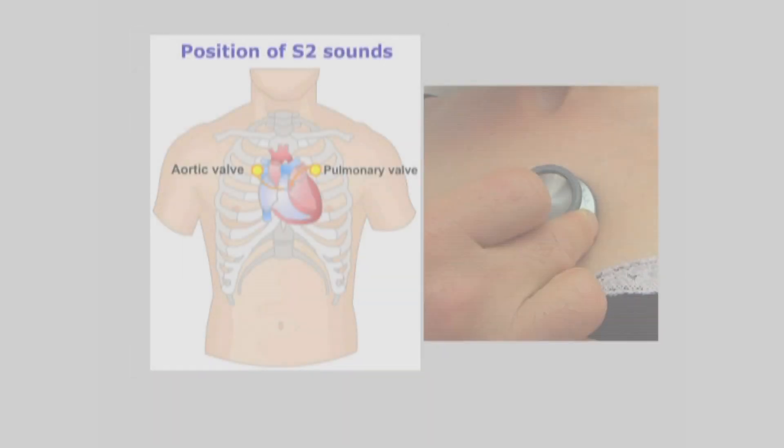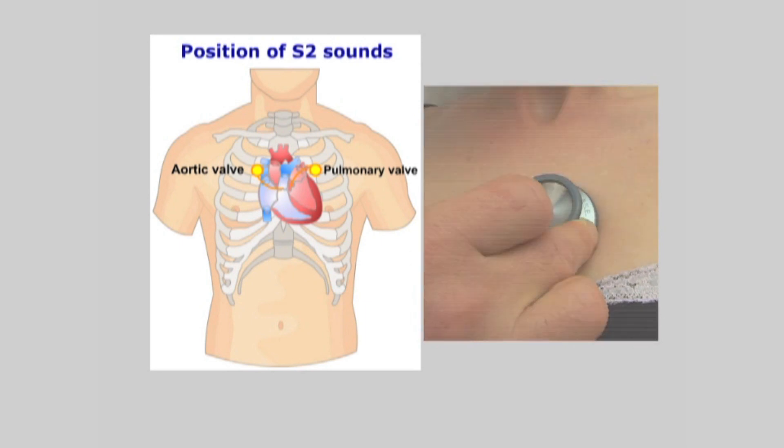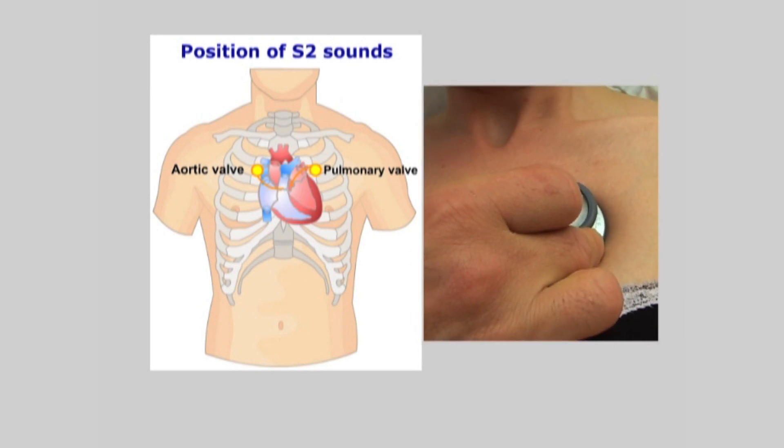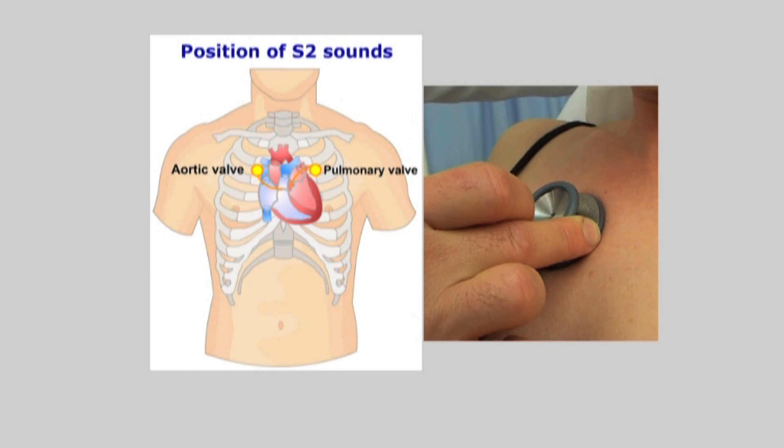The S2 sound is best heard over the second intercostal space, over the left and right sternal borders. Remember that in some individuals the heart sounds may be very loud and in some others decreased. This variation may be normal, especially in a very thin person and conversely in the very obese.